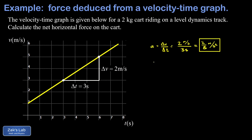Now we apply Newton's second law, which says that F_net — the net force experienced by this cart — is equal to the mass multiplied by the acceleration. We plug in the mass of the cart, which is two kilograms, and multiply by the acceleration, which is two-thirds meters per second squared. So in exact form, our answer is four-thirds kilogram meters per second squared.